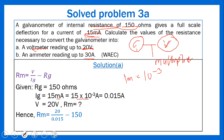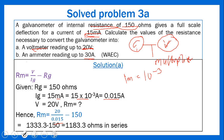Calculating: 20 / 0.015 = 1333.3, then subtracting 150 gives RM = 1183.3 ohms in series, because we are using a multiplier which is connected in series to the galvanometer. That is the answer to part (a).